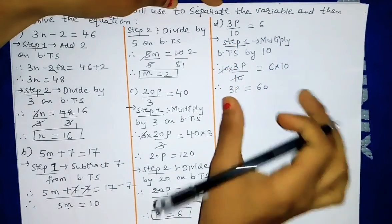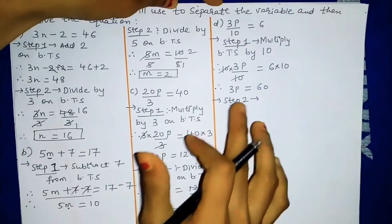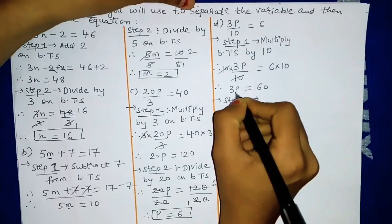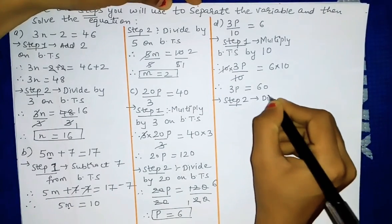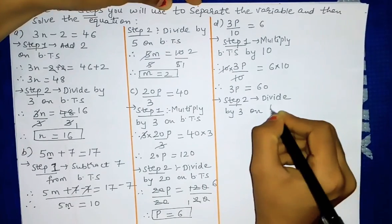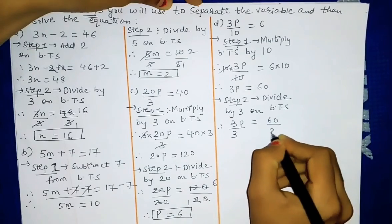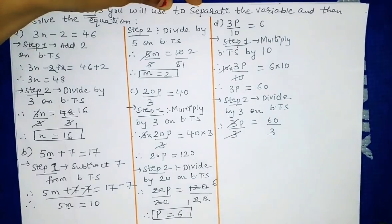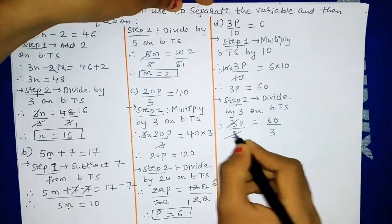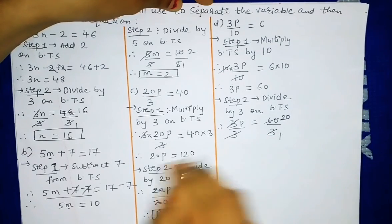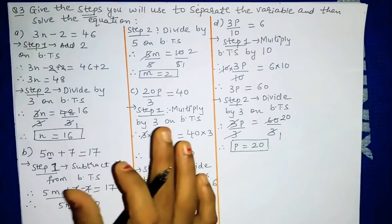Step 1 is done. Now step 2: only 3 is left and 3 is in multiplication, so opposite is division — divide by 3 on both sides. Our equation is 3p equal to 60. We divide both sides by 3 — the 3s cancel — and 60 divided by 3 gives 20. Only p is left on this side and 20 on the other side. So p equal to 20 is the answer of the 4th sum. This was question number 3 — hope you understood.